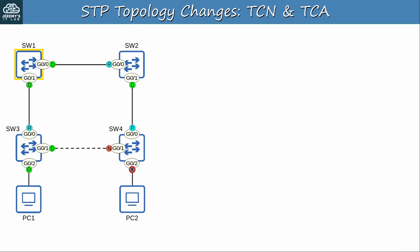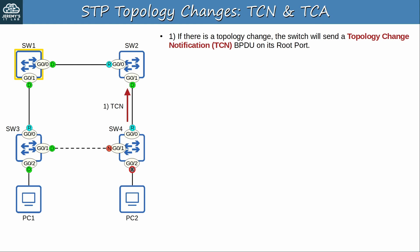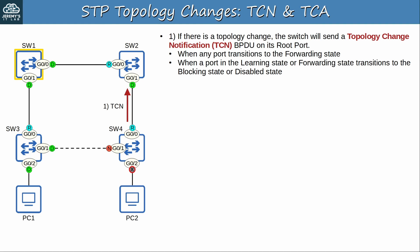Let's say switch 4 G0/2 went down, which counts as a topology change. If there is a topology change, the switch will send a topology change notification BPDU on its root port. What exactly counts as a topology change? When any port transitions to the forwarding state, it's a topology change. Or when a port in the learning state or forwarding state transitions to the blocking state or disabled state. In either of those cases, the switch will send a TCN.